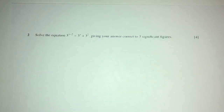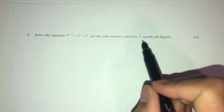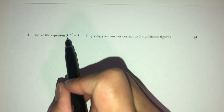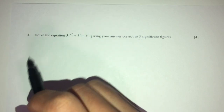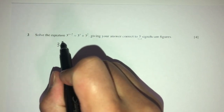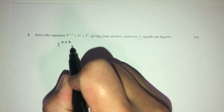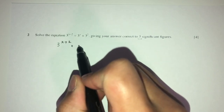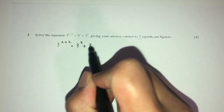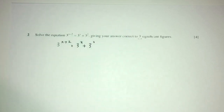Now, let's move on to question number 2. Here, we have to solve the equation giving answers correct to 3 significant figures. Solving means find the unknown — here we have x to find. So, here we have 3x plus 2 is equal to 3 to the power of x plus 3, times 2.